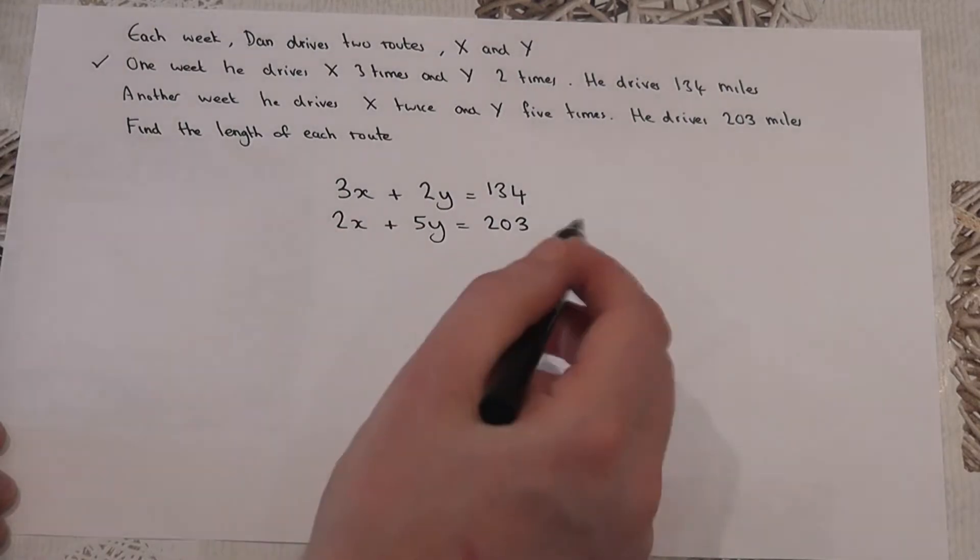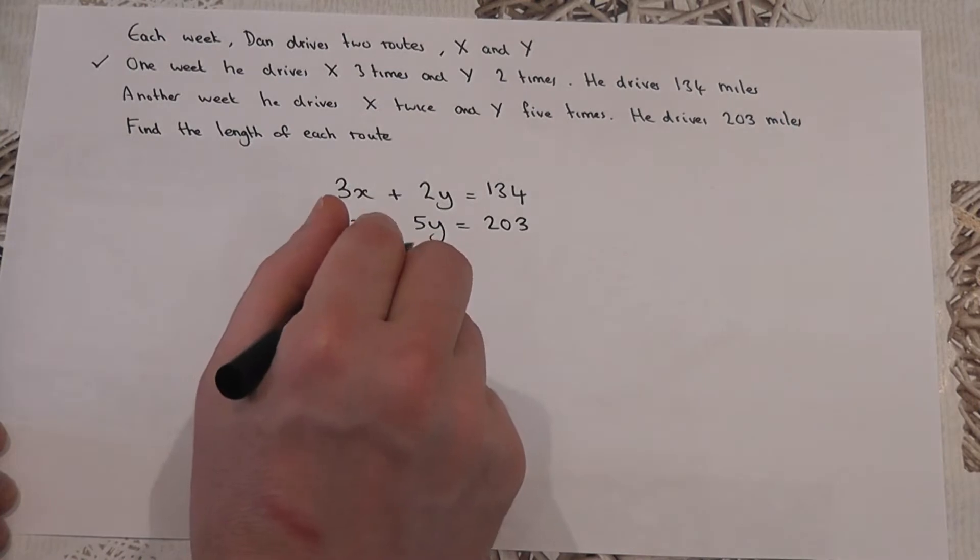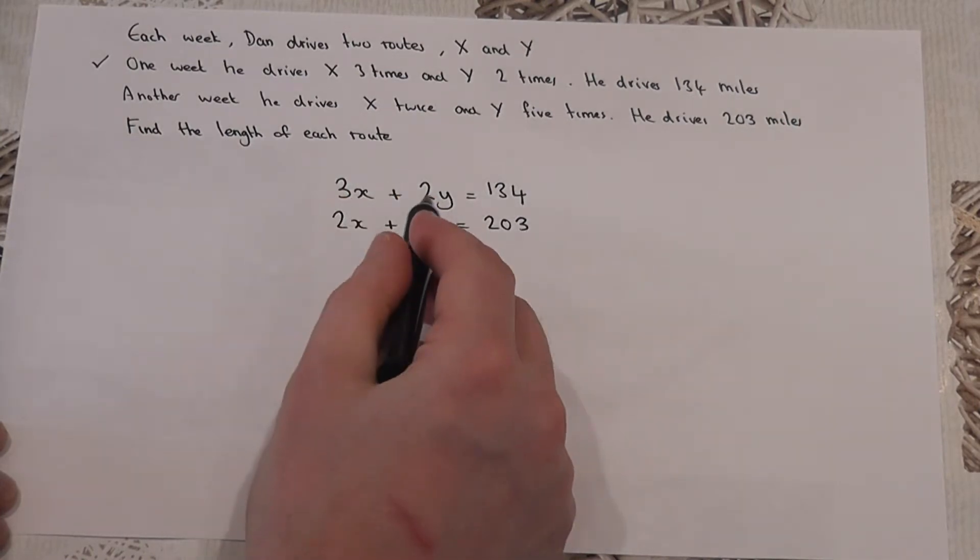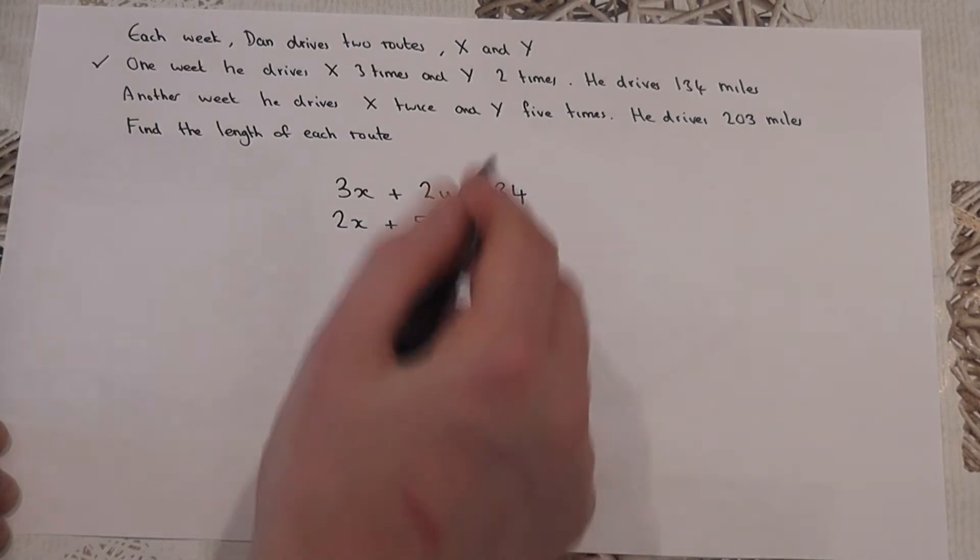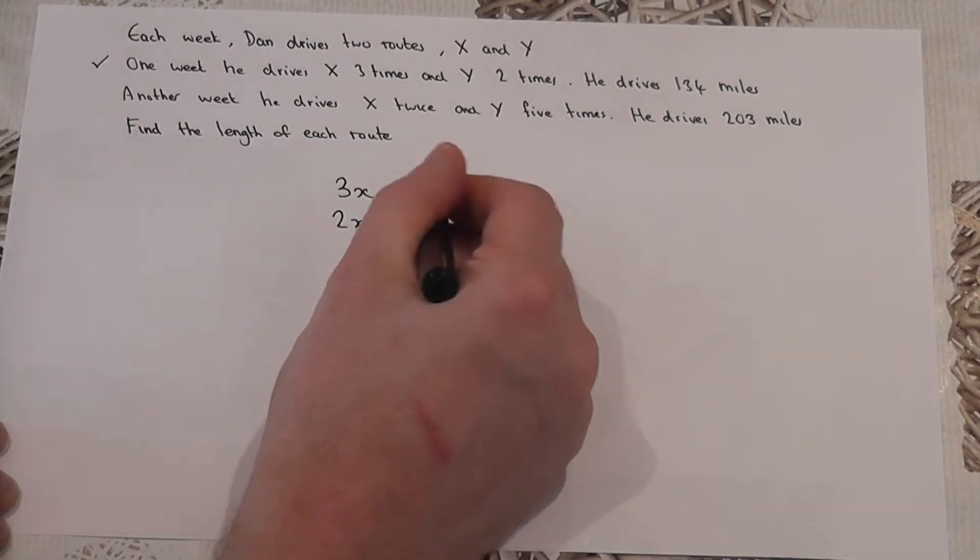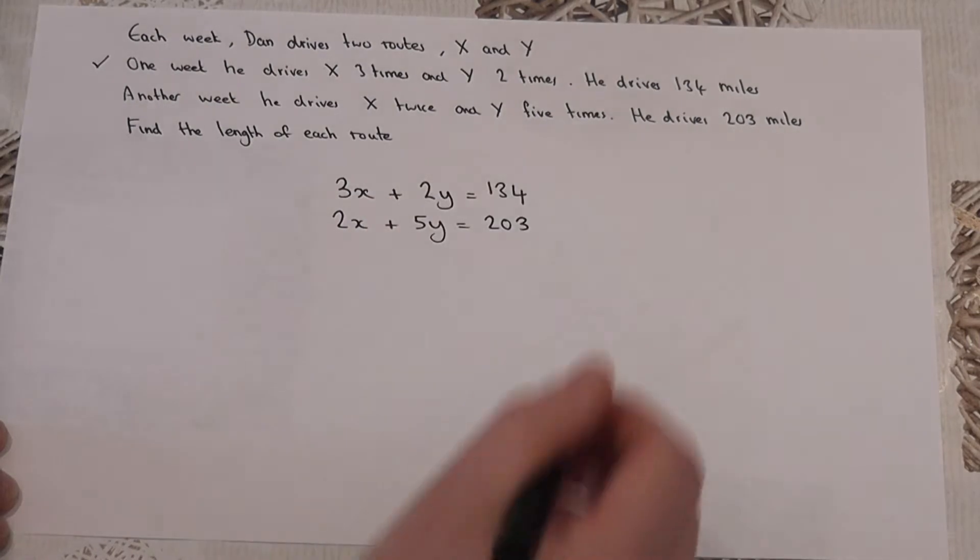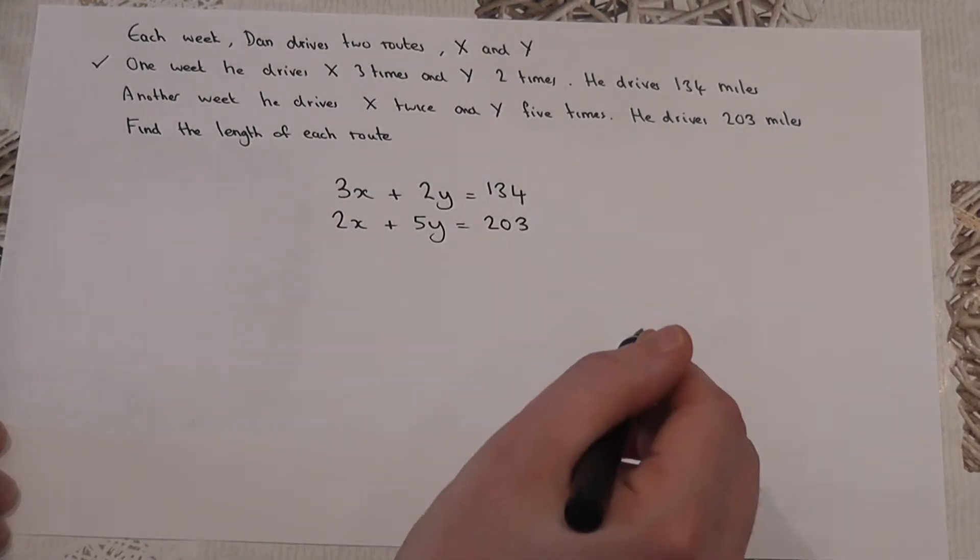Now, to solve these equations, there's lots of methods. However, one nice way is to get the number of one variables to be the same. And we're going to make the y have the same coefficient or the same number next to it. You'll see why in a moment.